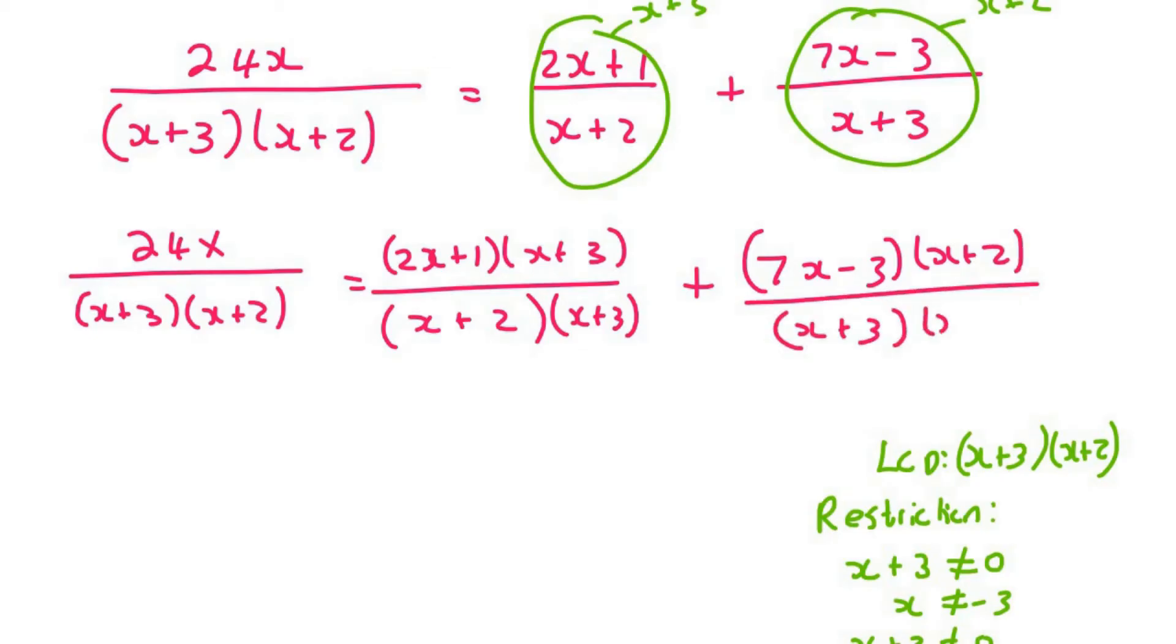Okay, now the denominators are all the same so we can cancel them out. And then remember, just copy down whatever you have, don't do anything fancy just yet. So that's going to be equal to (2x+1)(x+3) plus (7x-3)(x+2).